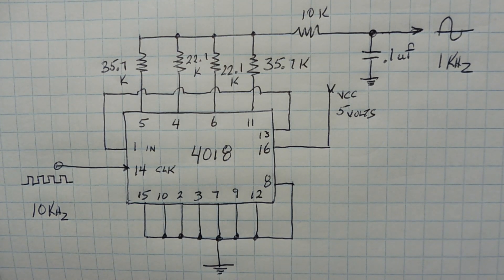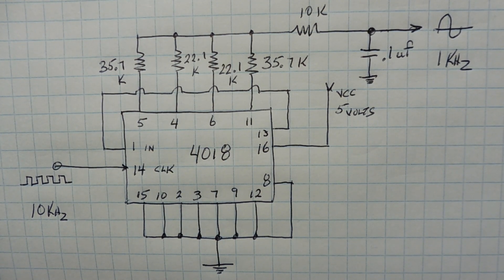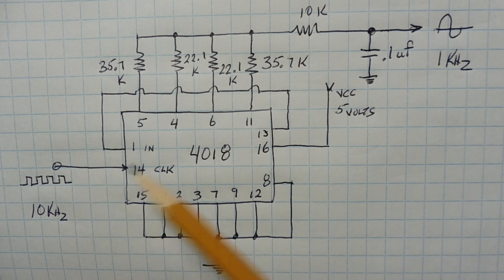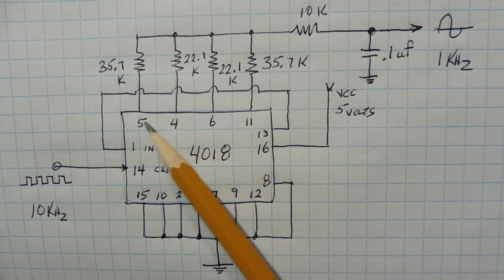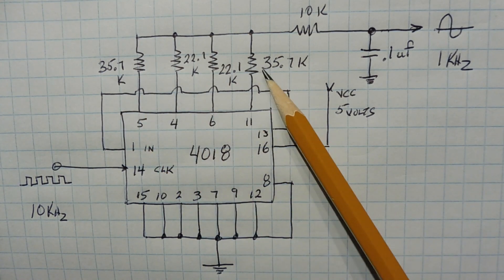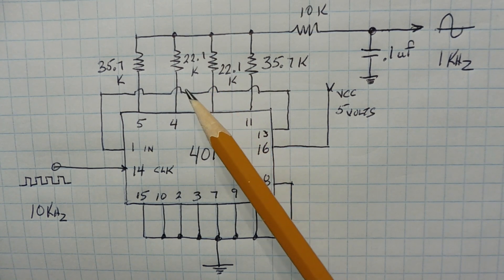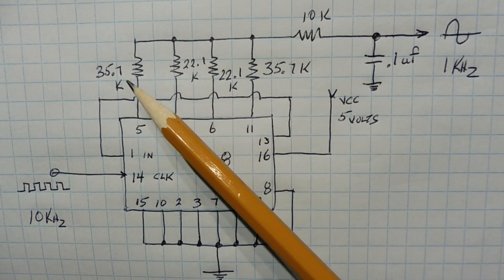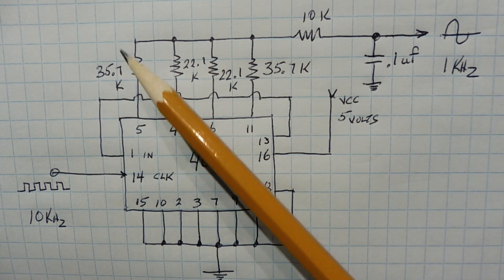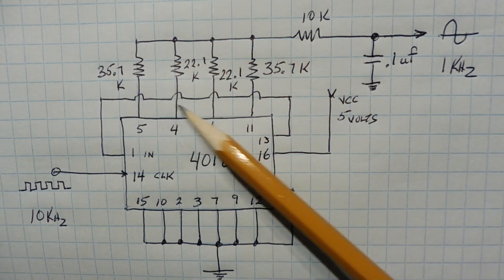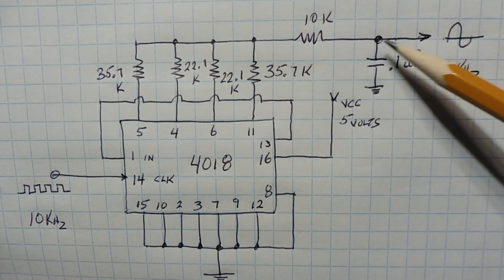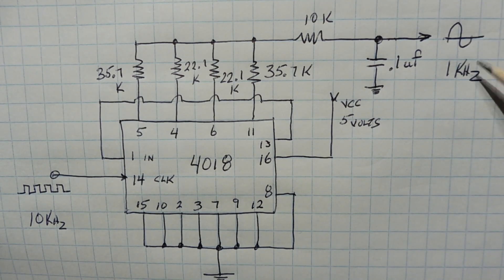Here's the circuit I built on my breadboard - my square wave to sine wave converter using a 4018 as a ring counter, divide by 10. It's powered by 5 volts into pin 16. The input clock is pin 14, where I'm feeding a 10 kilohertz square wave signal, and I'll get a one kilohertz sine wave output. I have four DAC resistors - my digital to analog converter resistors. The two outer ones are 35.7K and the two inner ones are 22.1K. These are 1% precision resistors. I substituted the 22.1K for 22K, and for the 35.7K I used a 33K in series with a 2.2K. At this point we'll have our chunky sine wave, then it goes through this low pass filter - a 10K and a 0.1 microfarad capacitor - giving us our clean one kilohertz sine wave output.